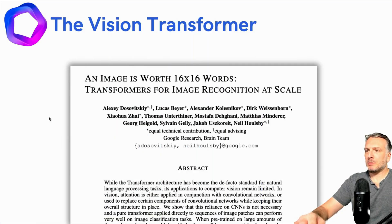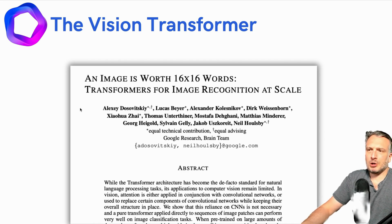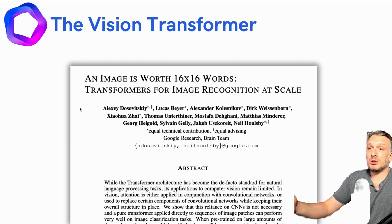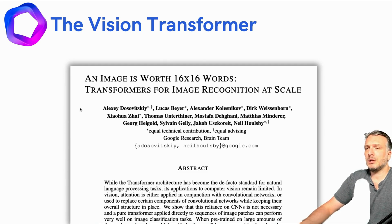The vision transformer comes from a paper published by Google in 2020, and it captures a process on how to feed images to transformers. It is actually a pretty surprising paper because they were able to use the typical transformer architecture and feed images to it. They were able to build models that had performances on par with typical convolutional networks, which have been dominating the field of computer vision for a long time. So it is interesting to see a model that is able to perform on par or even better than convolutional networks.